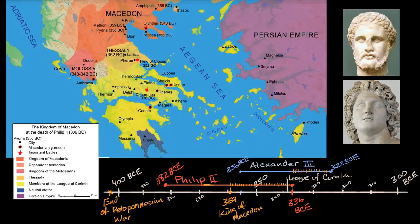The 5th century in Greece started off with the Persian invasions and ended with the Peloponnesian War. Now we're entering into the 4th century in Greece. As we enter into the 4th century, Thebes is the dominant city-state, but as we get into the mid-4th century and especially the end of it, we will see that all of Greece gets dominated and then unified by the Macedonians.